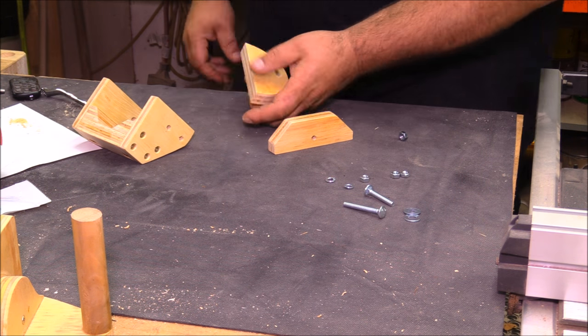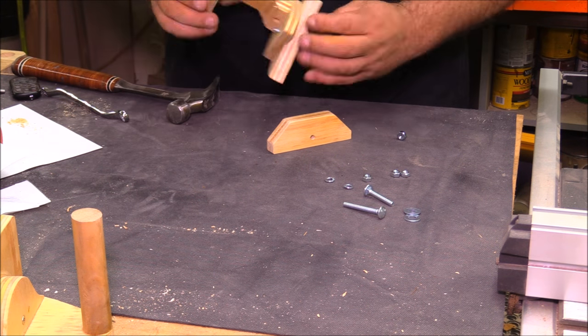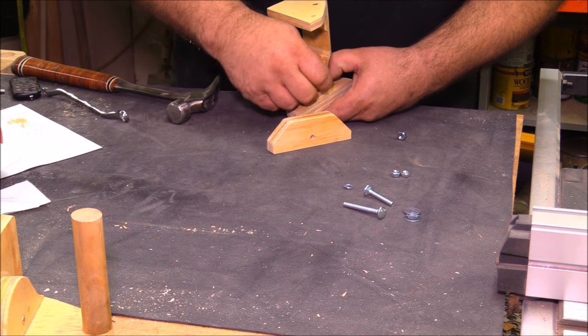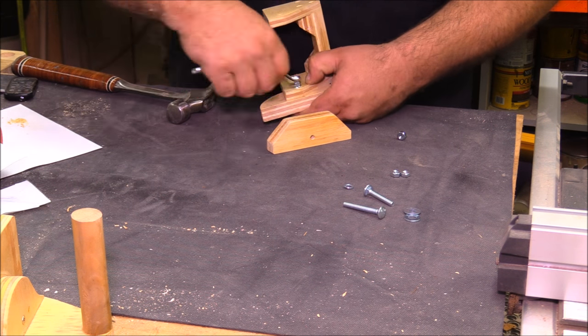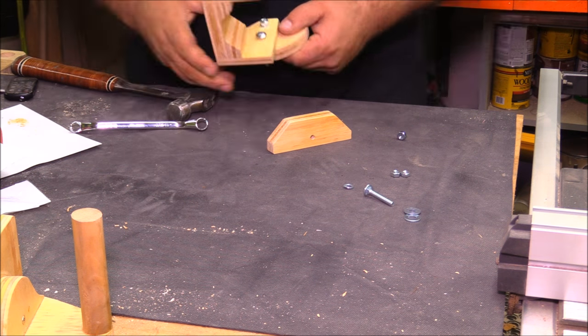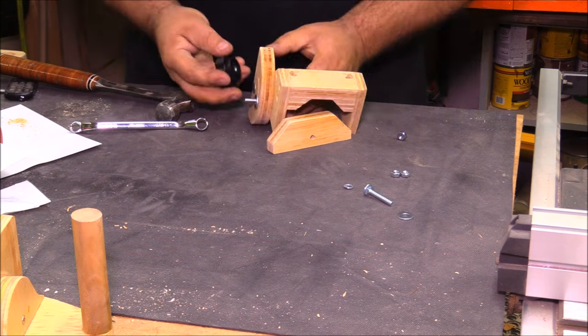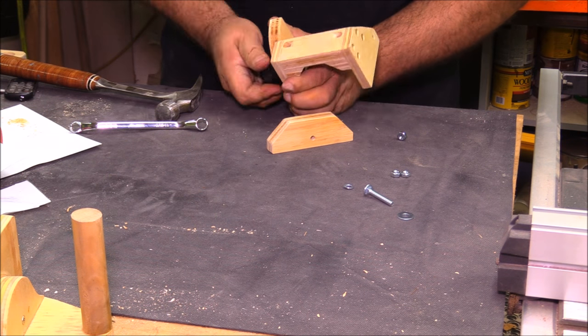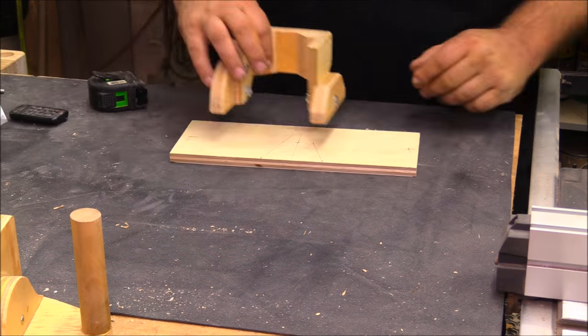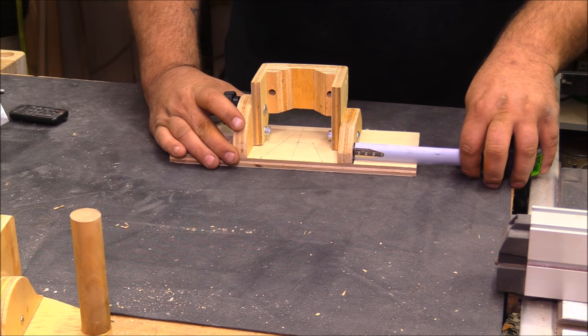Before mounting the parts that make this whole thing tilt to the router base, I'm going to add them to the router mount so I can level everything out and make sure it's positioned correctly. With the router mount and tilting parts done, I just need to mount it to a base.